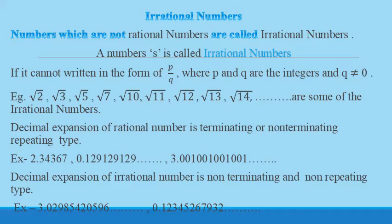The numbers which are not rational numbers are called irrational numbers. So number s is called the rational numbers if it cannot be written in the form of p by q where p and q are the integers and q not equal to 0. So root 2, root 3, root 5, root 7, root 11 are some of the examples of irrational numbers.